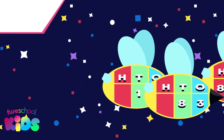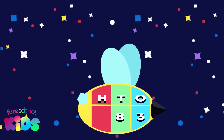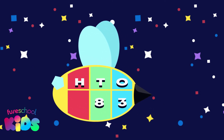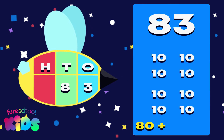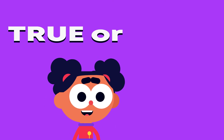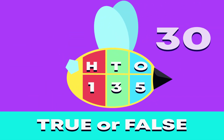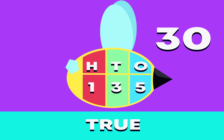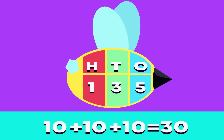Which beehive bot has an 8 in the tens place? This one? Good spotting! The number is 83, which is 8 tens and 3 ones. Now I need your help figuring out the following answer. True or false? The 3 in this number is equal to 30. The correct answer is true. The 3 is in the tens place — 3 tens is 30.